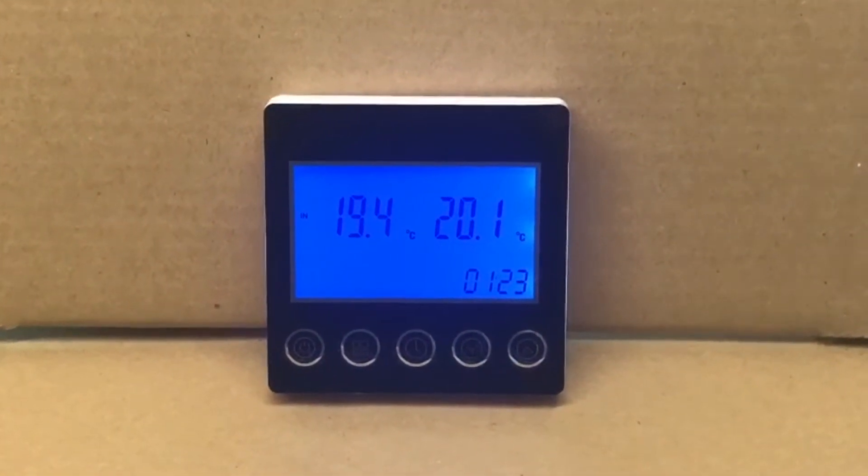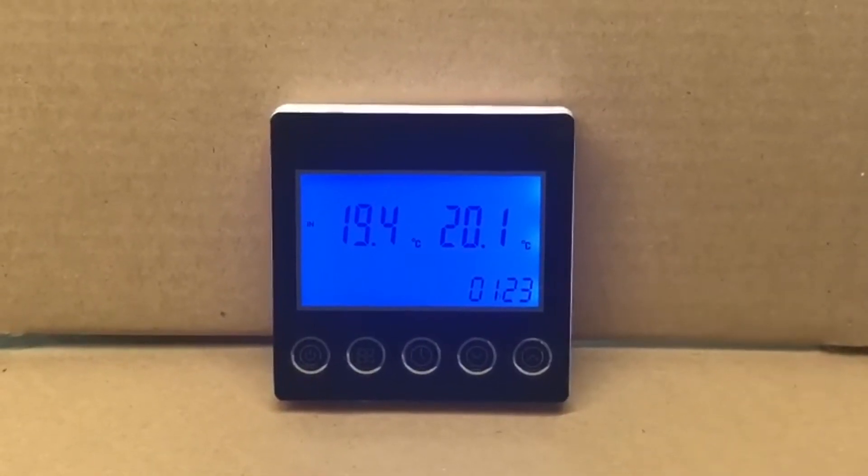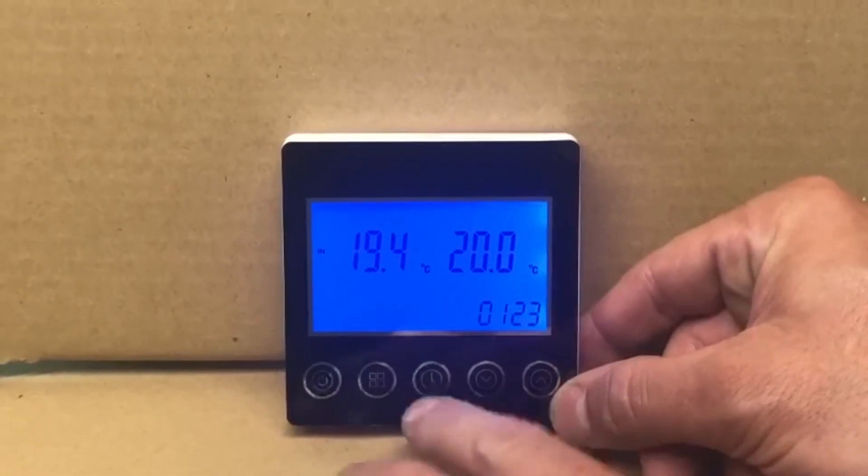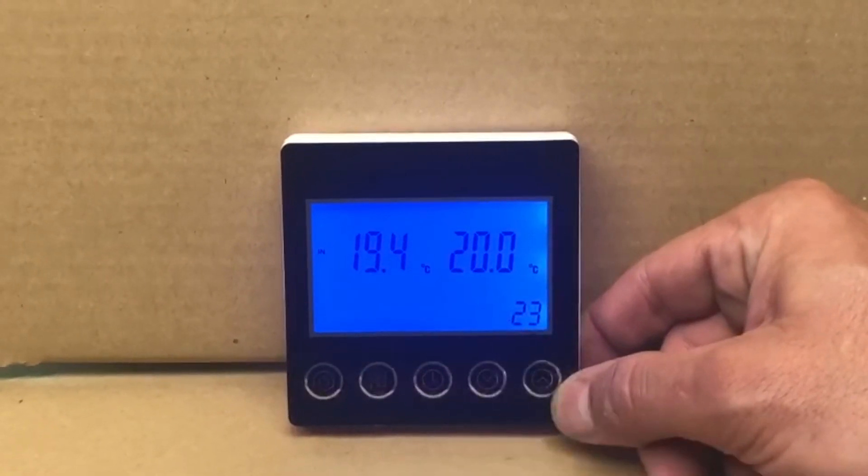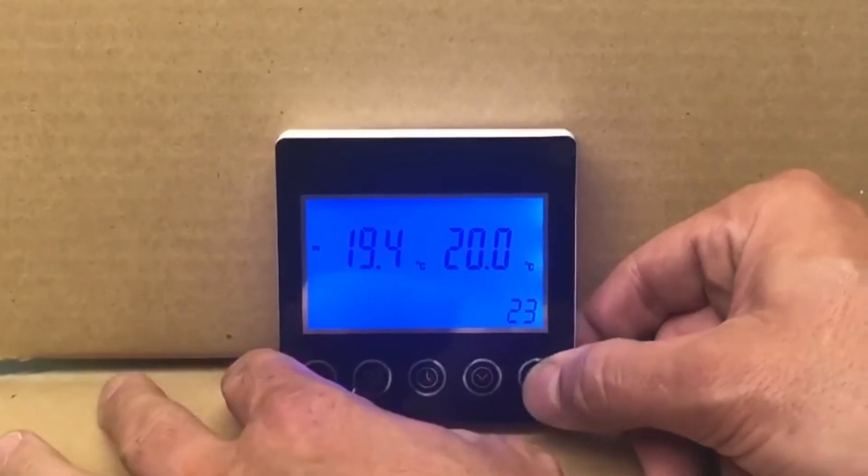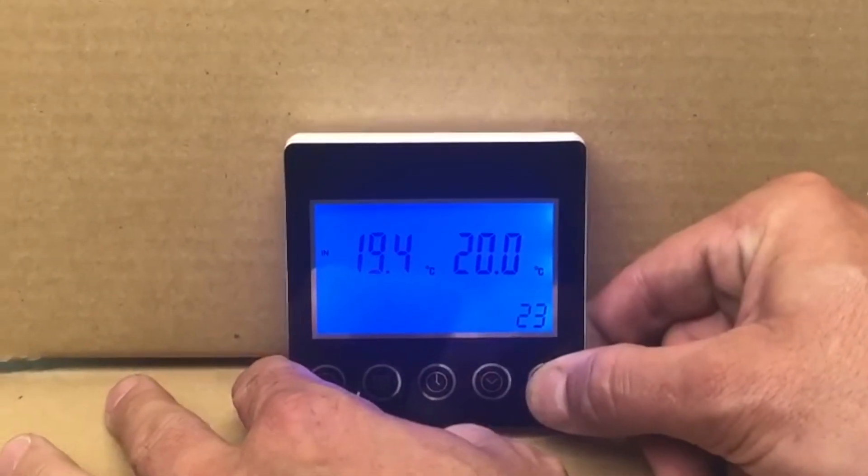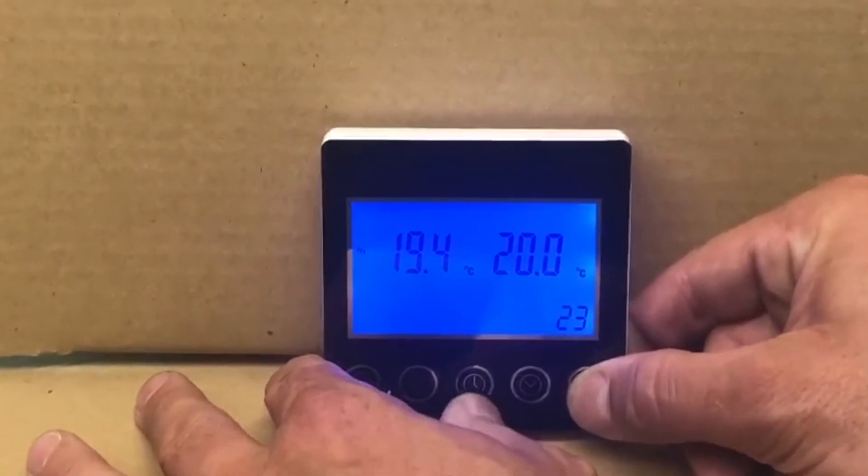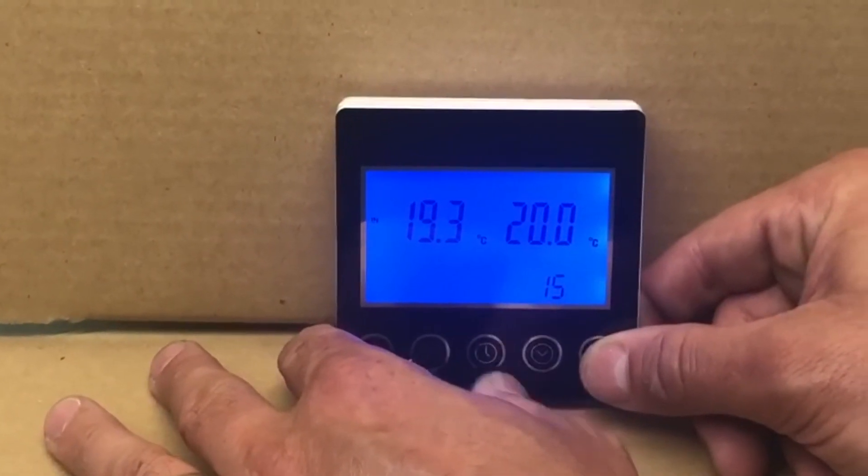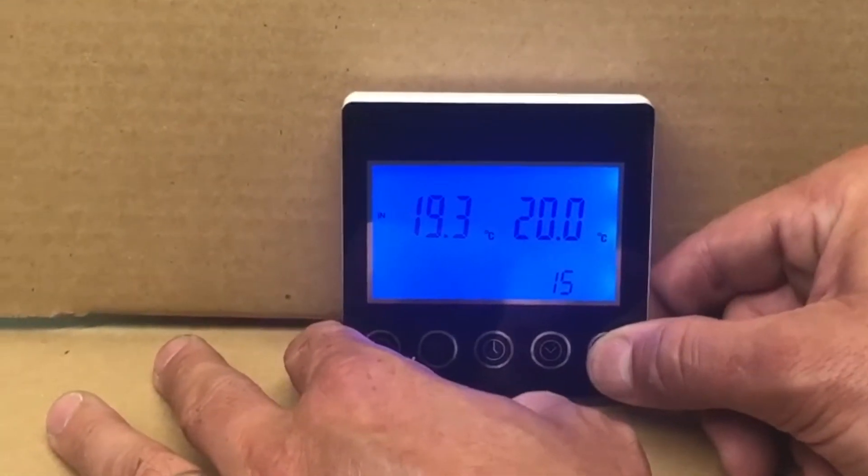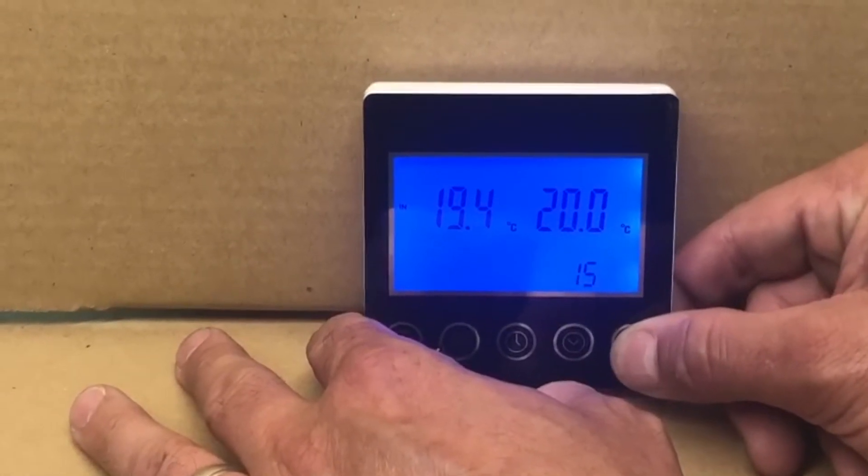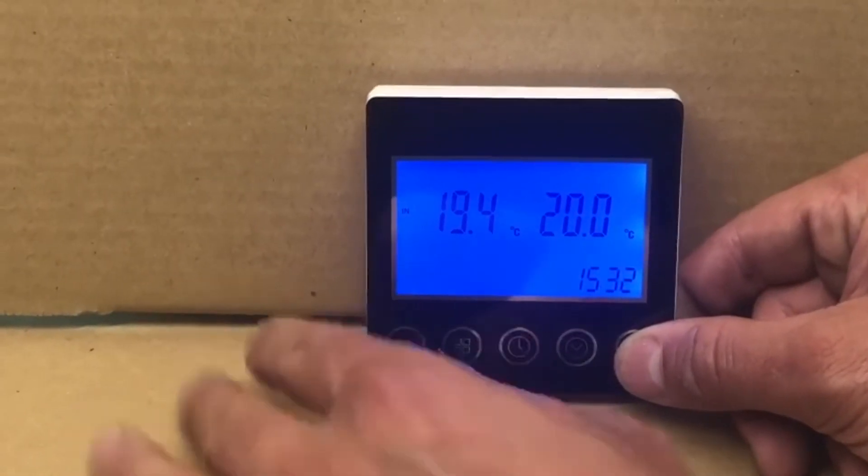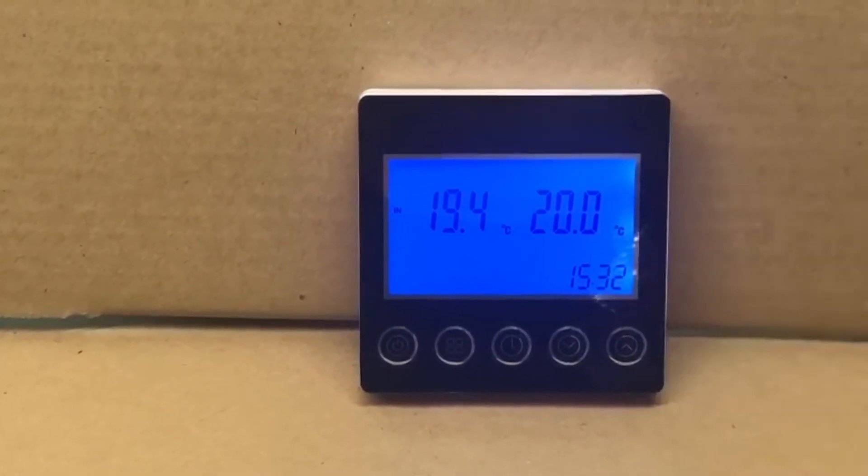Now we're going to set the clock. The first thing we do is a short press on the timer button. The hour is flashing. We can then change the hour to the correct time, for example three o'clock. Press the timer button once again and we can set the minutes. Press the timer button again and now we have the clock set.